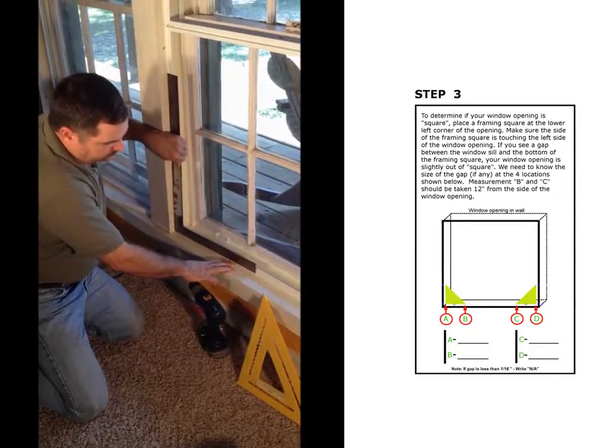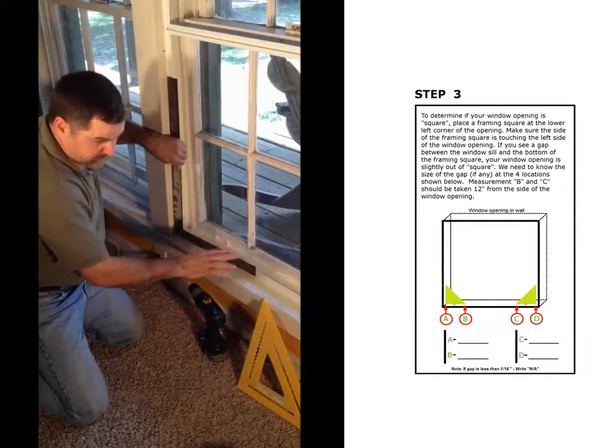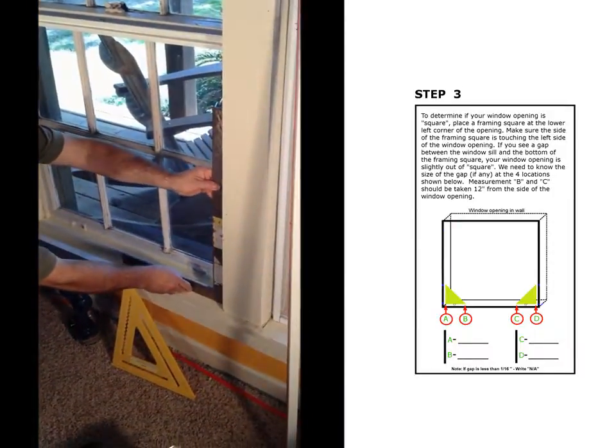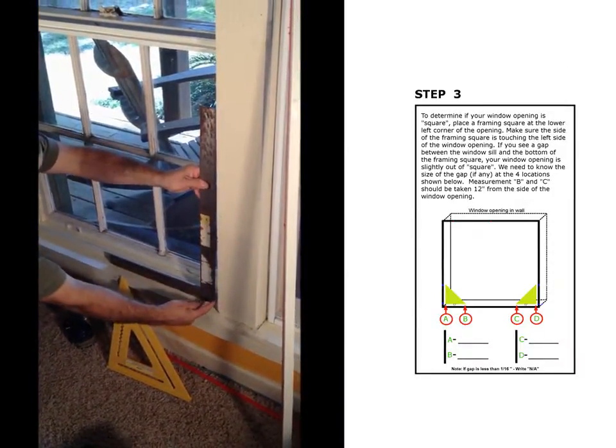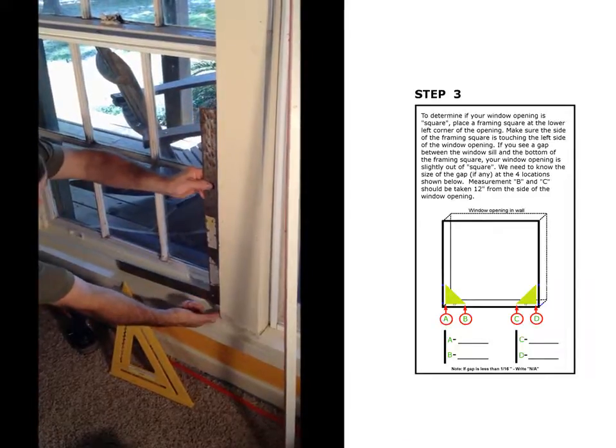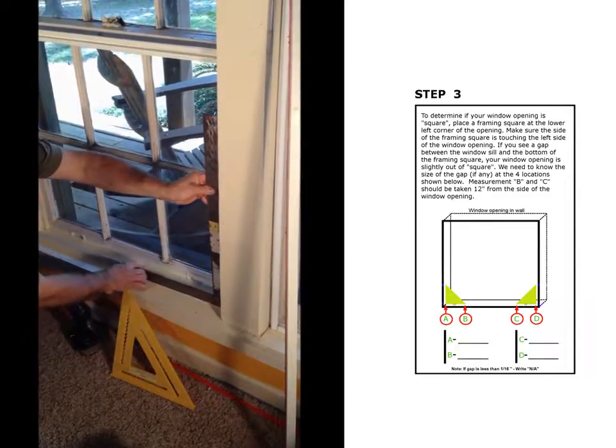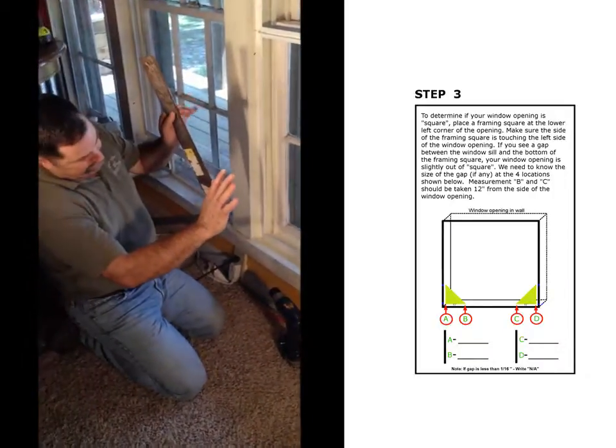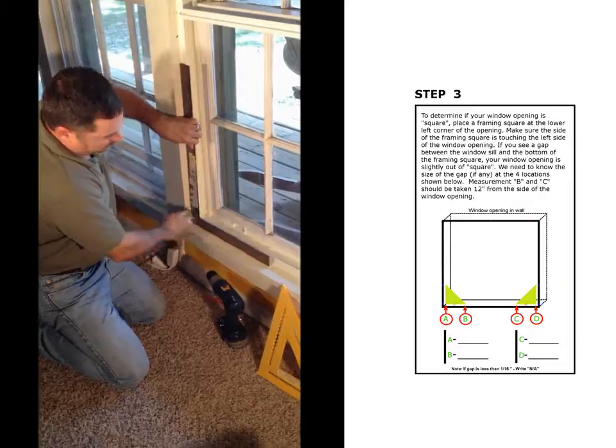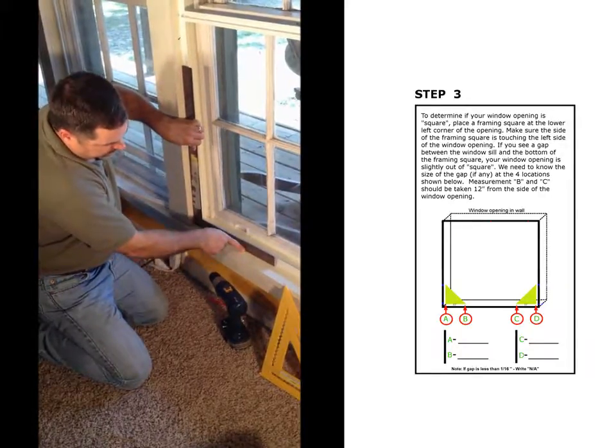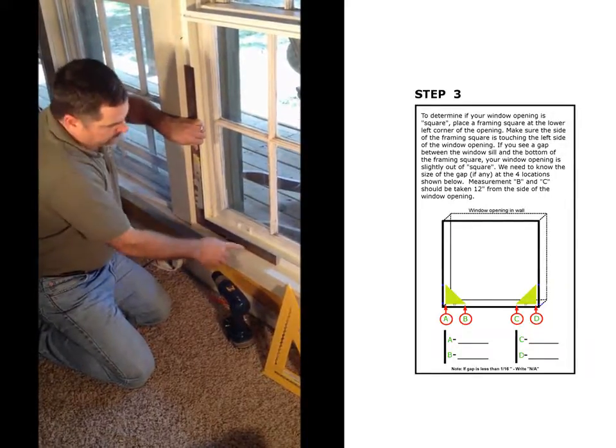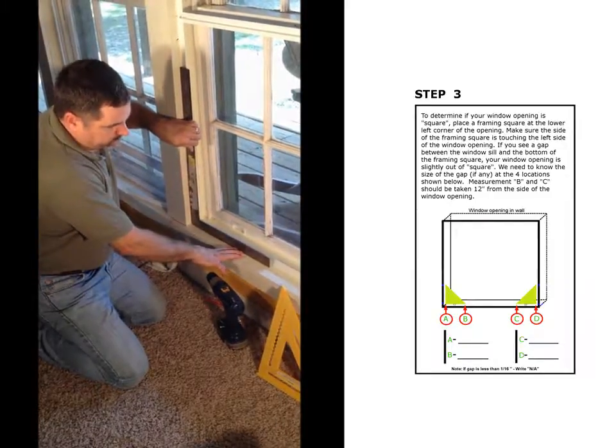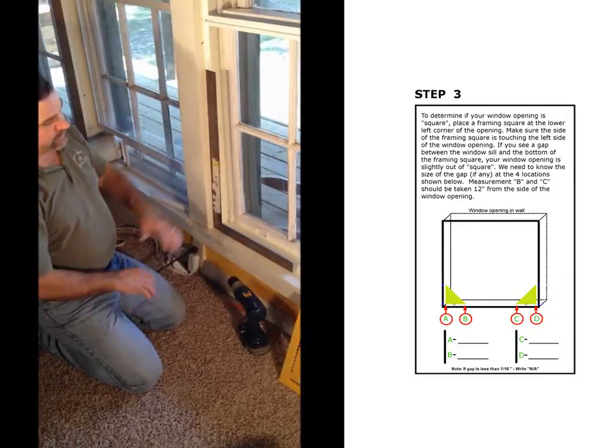Now, chances are, if your window isn't square, there will be a gap on one side. When you put the square on the other side, there will be a gap on the other side of the square. That gap really indicates that the window is leaning. So we want you to put the square in, go 12 inches away, give us the measurement that's right there. If it's a 16th or less, we call that square. If it's more than that, we really need to know so we can make our panel fit.